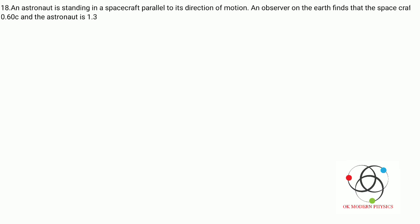So here is question number 18: An astronaut is standing in a spacecraft parallel to its direction of motion. An observer on the earth finds that the spacecraft's speed is 0.60c and the astronaut is 1.3 meters tall. What is the astronaut's height as measured in the spacecraft?